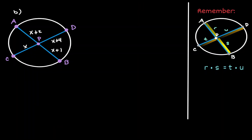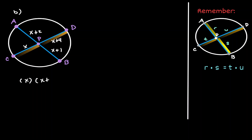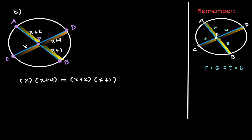Notice that we have the same situation in example B, so we can apply the same property. Let's start by multiplying the two sections in chord CD — CP times PD. We have established that that's going to be equivalent to the multiplication of the segments of chord AB: AP and PB, where AP is x plus 2 and PB is x plus 1. Let's start by performing the multiplication on the left. The x is going to get distributed, giving us x squared.